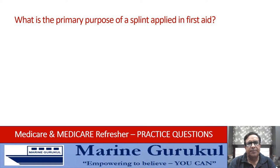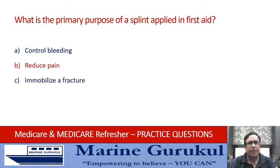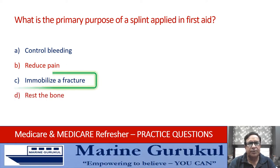What is the primary purpose of a splint applied in first aid? Is it to control bleeding, reduce pain, immobilize the fracture, or rest the bone? Answer is C — it is primarily to immobilize the fracture.